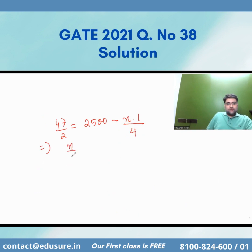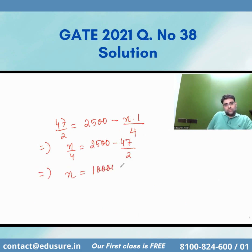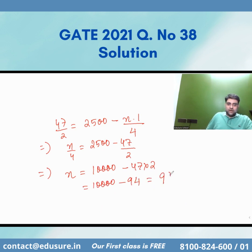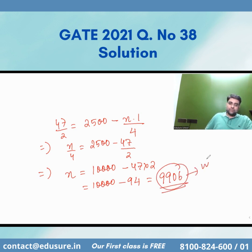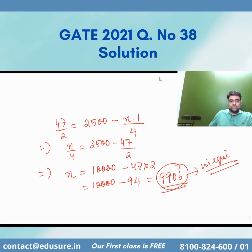So n divided by 4 equals 2500 minus 47/2. Therefore n equals 10,000 minus 47 times 2, which is 10,000 minus 94. So the number of firms in long run equilibrium is 9,906.